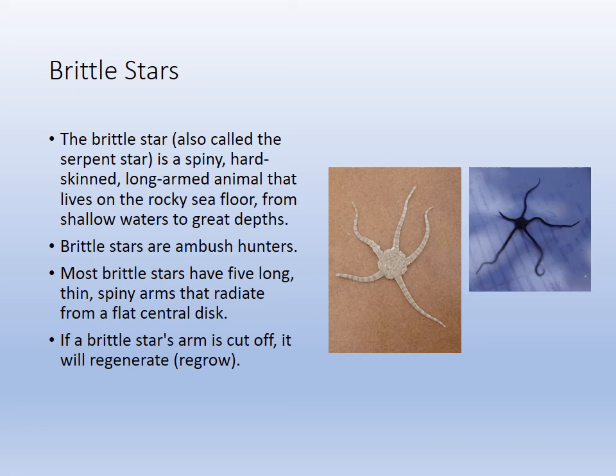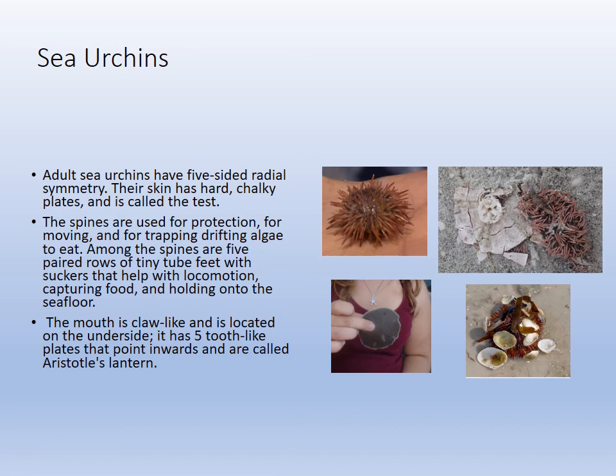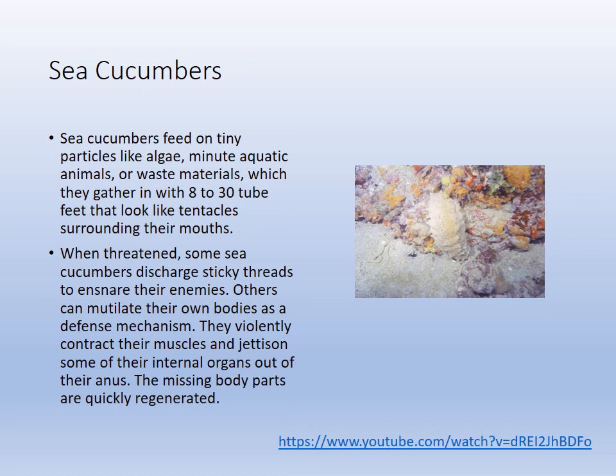Brittle stars are ambush hunters hiding in seagrass beds. Sea stars — starfish — are very common, living from brackish to pure salt water, very diverse and voracious hunters. They eat bivalves by wrapping around them, using their water pump to pry them open, then extruding their stomach from their mouth, digesting the prey in the shell and slurping it in. Sea urchins include the flattened sand dollar, and they tend to decorate themselves for camouflage. The sea cucumber has a fascinating YouTube video worth watching — it shows a symbiote called the pearlfish in a fish-sea cucumber symbiotic relationship.